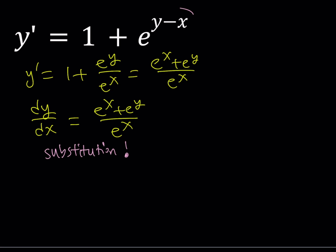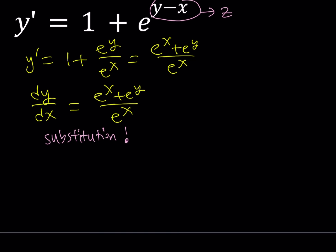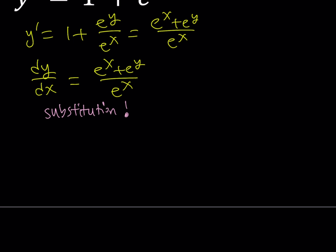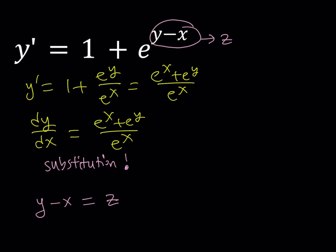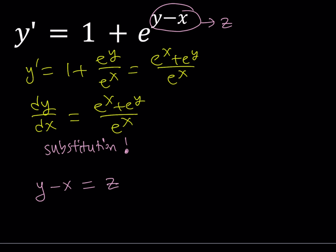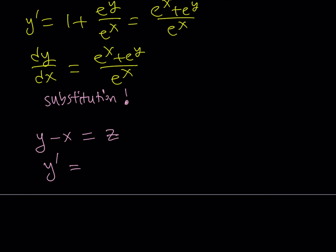So what am I going to do? I'm going to replace y minus x with something — let's call that z. So let y minus x equal z. That gives me an equation that looks a little simpler: y prime equals 1 plus e to the power z.